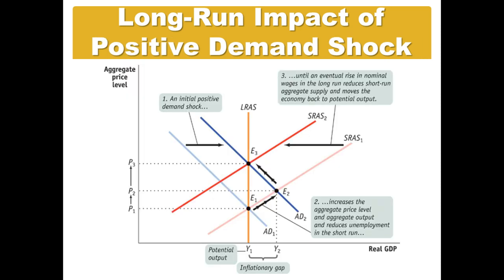The same logic applies to a positive demand shock. If we were at equilibrium E1 and there was a right shift in aggregate demand putting us at E2, we'd have an inflationary gap. With an inflationary gap, prices are rising, so workers demand higher nominal wages in the new short run to compensate for rising costs due to inflation. Those increased nominal wages cause short run aggregate supply to shift to the left due to reduced profit per unit for producers. Short run aggregate supply shifts left and equilibrium moves from E2 to E3 — again back at potential output, but at a higher price level. This is why it's called an inflationary gap: there are inflationary pressures on the economy as it readjusts back to potential output.